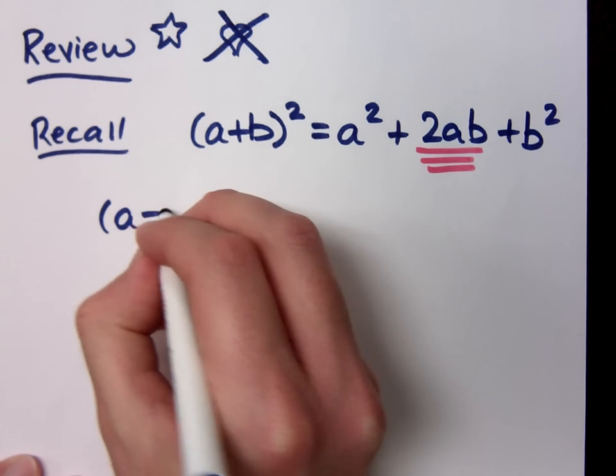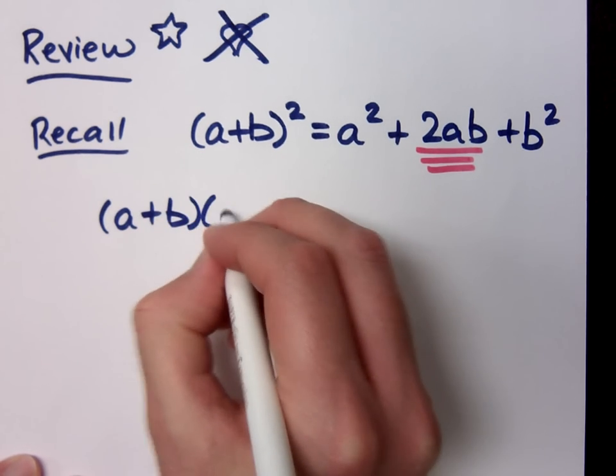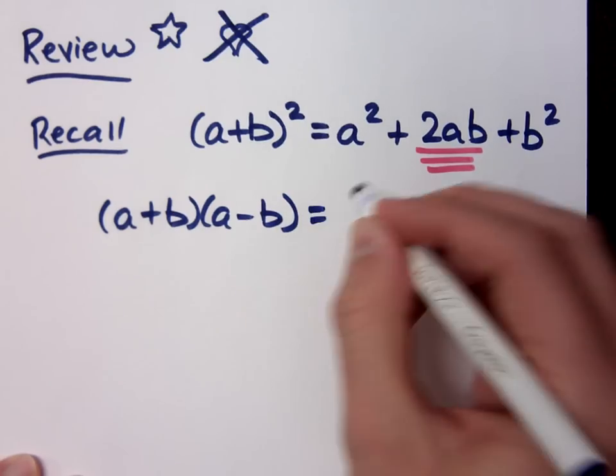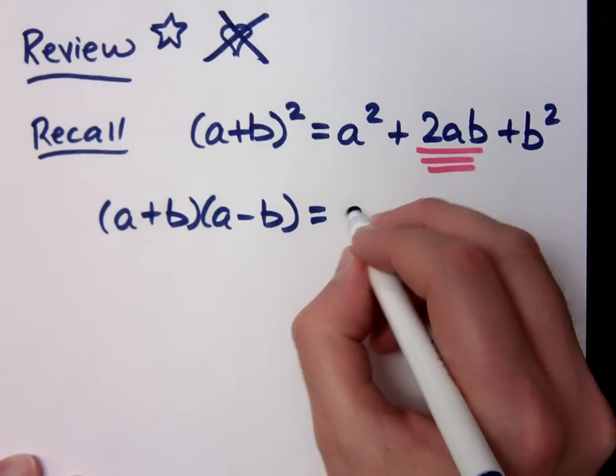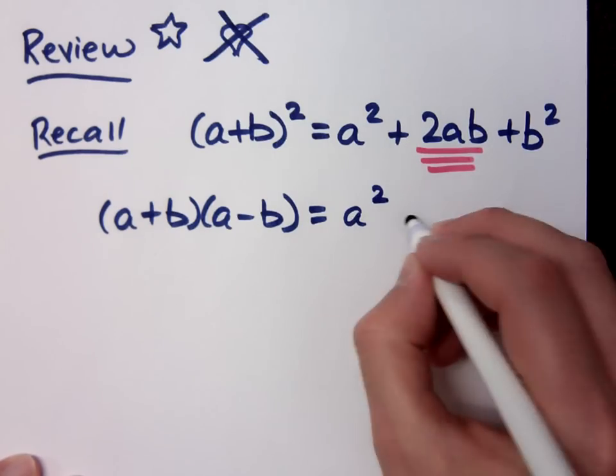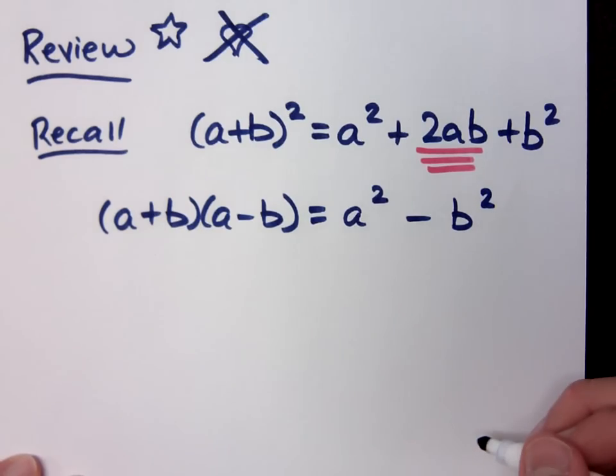One of the other super awesome special products is this guy. What happens if I multiply (a+b) times (a-b)? You get the difference of squares, a² minus b².